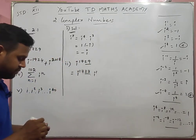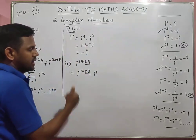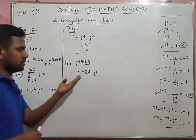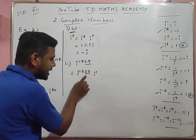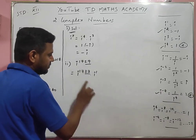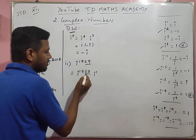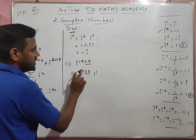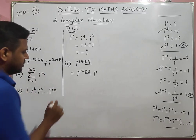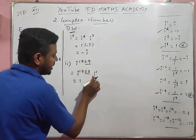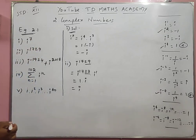1729 divided: we split as 1728 and 1. 28 divided by 4 is exact, so 1728 is divisible by 4. Therefore i power 1728 equals 1, and the answer is 1 into i, which equals i. That is very easy.